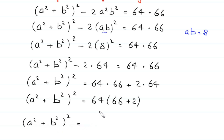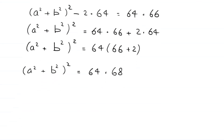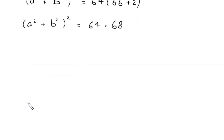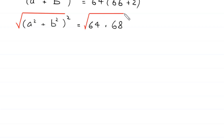Factoring out 64 from the right hand side, we get a squared plus b squared whole squared equals 64 times 68. Now from here we take the square root of both sides.